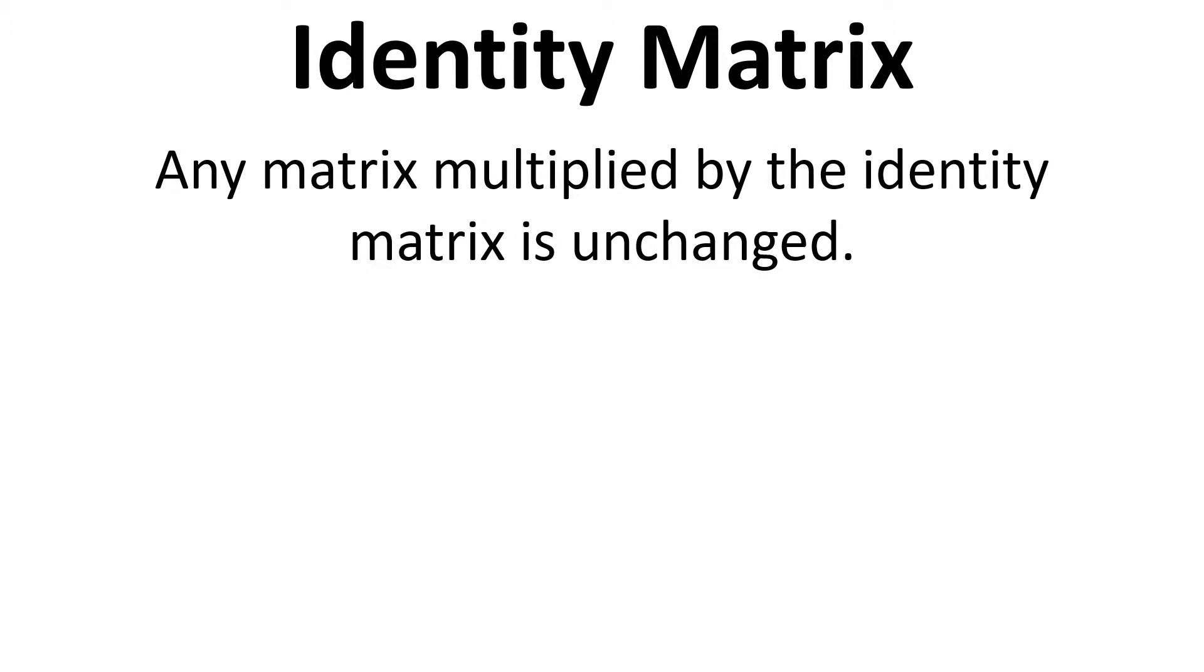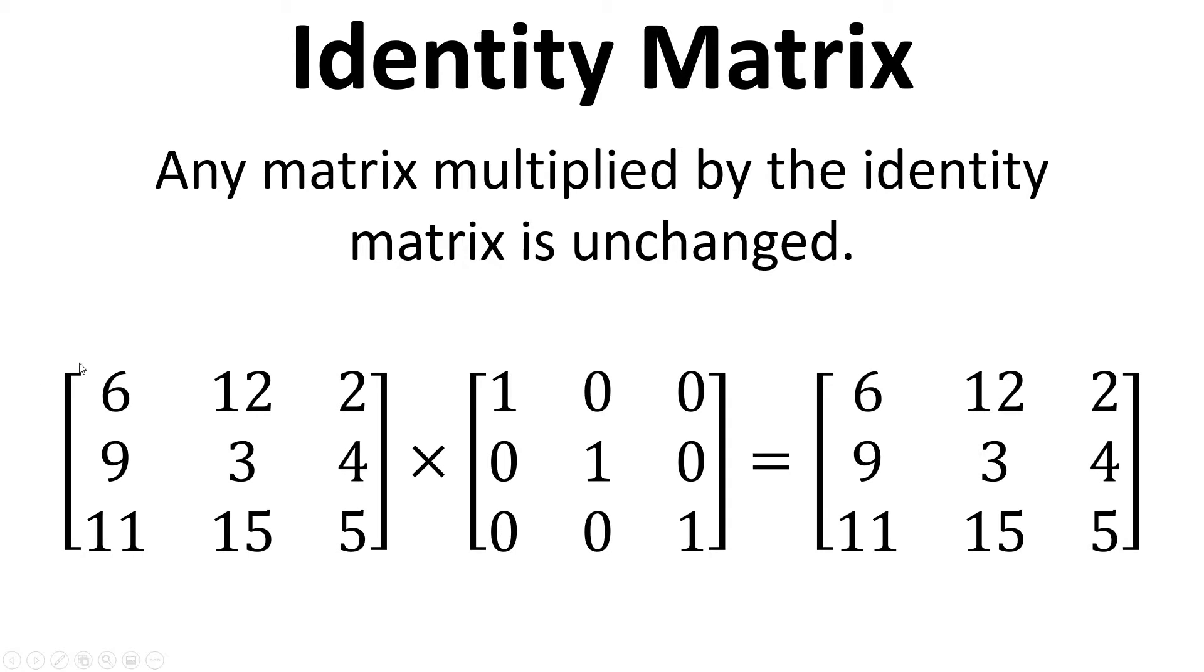Now any matrix multiplied by the identity matrix is unchanged. So if we take this example here, 3 by 3 matrix multiplied by a 3 by 3 identity matrix, what we get out when we calculate all of that is exactly the same as the matrix that we started with.